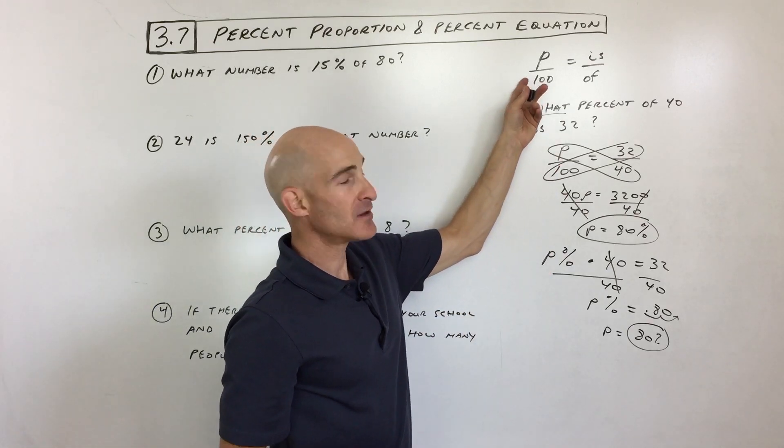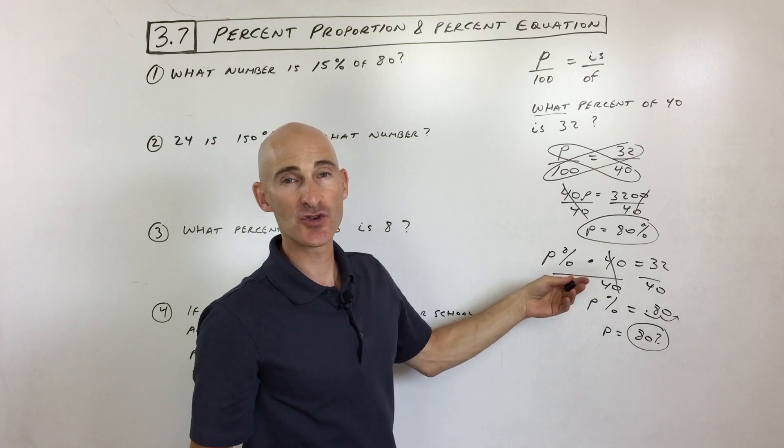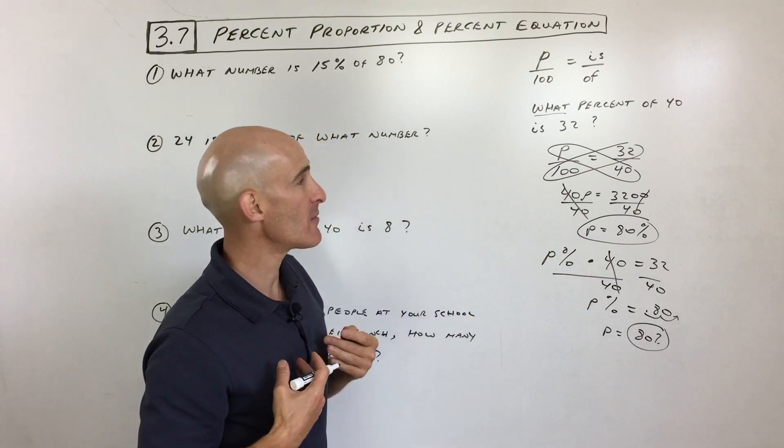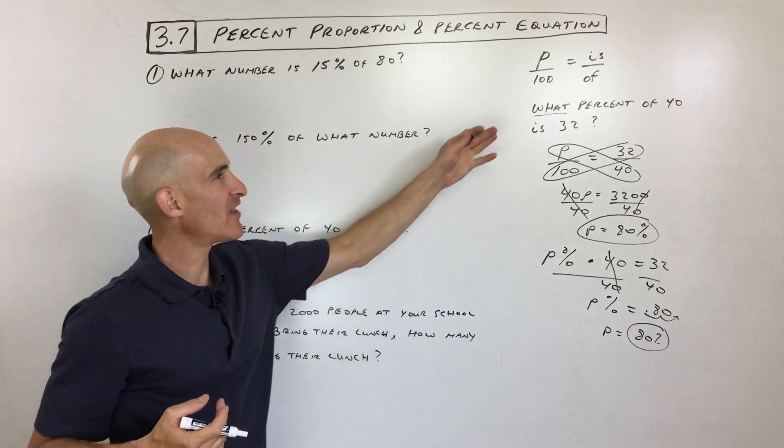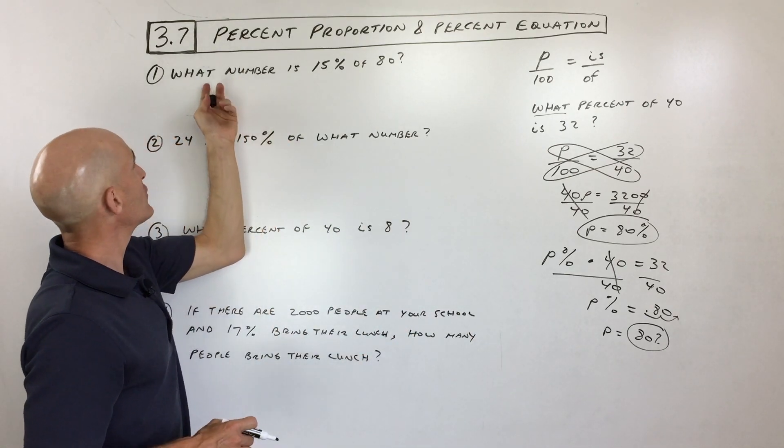So if you have to do the proportional method, if they say to do it that way, you can do it that way. Or if you want to do it the equation way, you can do it the equation way. I prefer the equation way myself because I kind of like that idea of just translating the sentence into an equation. But you can do it either way.